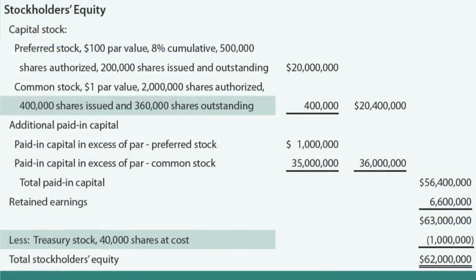In the stockholders' equity section, we have not affected the total amount of common stock. This company has common stock at $1 par value, 2 million shares authorized, 400,000 shares issued, but only 360,000 shares outstanding. The 40,000 are held in treasury, but we still show 400,000 shares issued times the par value — $400,000. There was no journal entry to those accounts when we bought the treasury stock. Instead, we show a contra equity account: less the cost of treasury stock, 40,000 shares at a cost of $1 million.